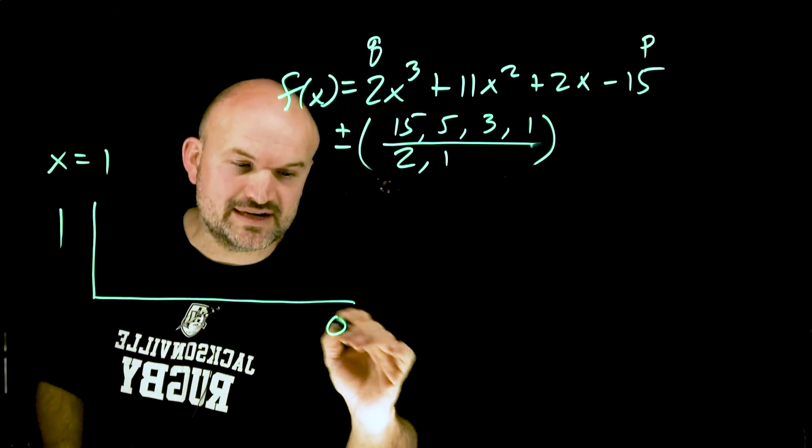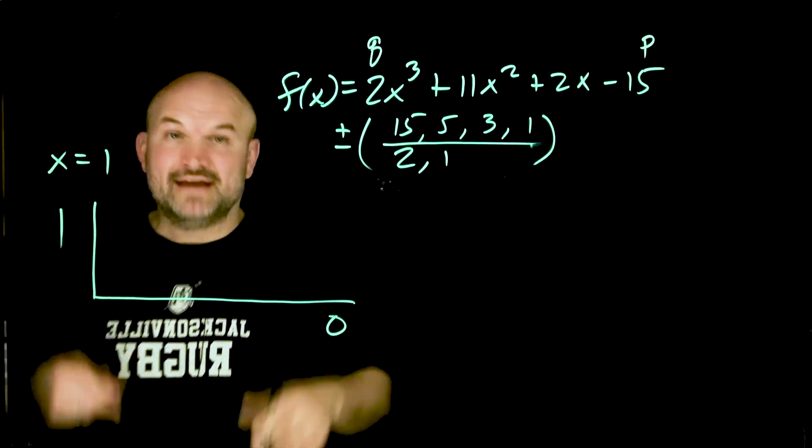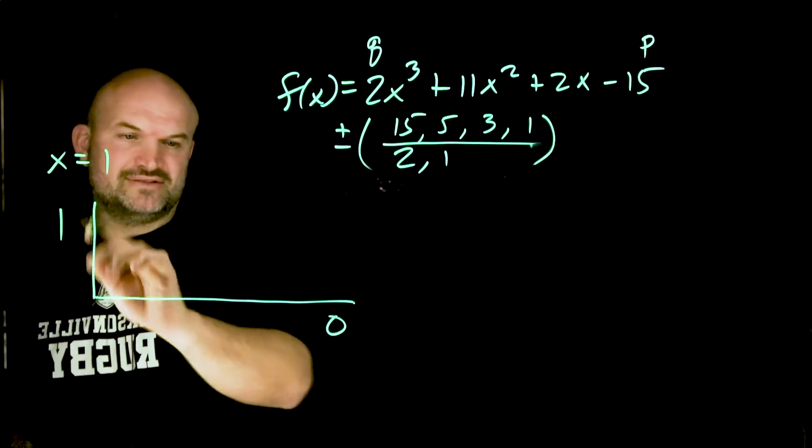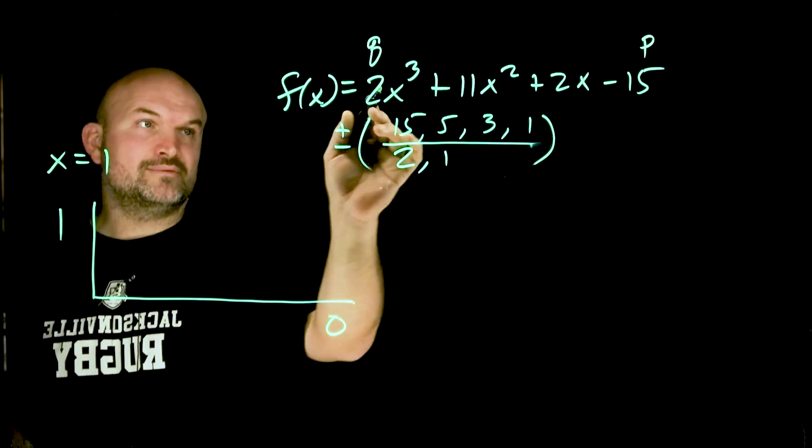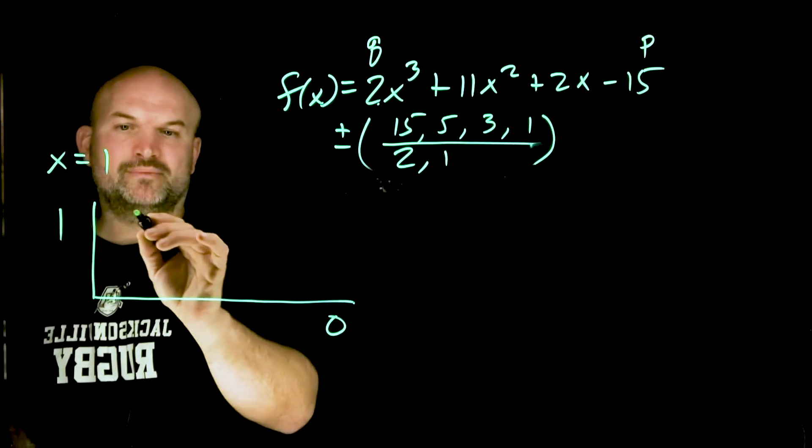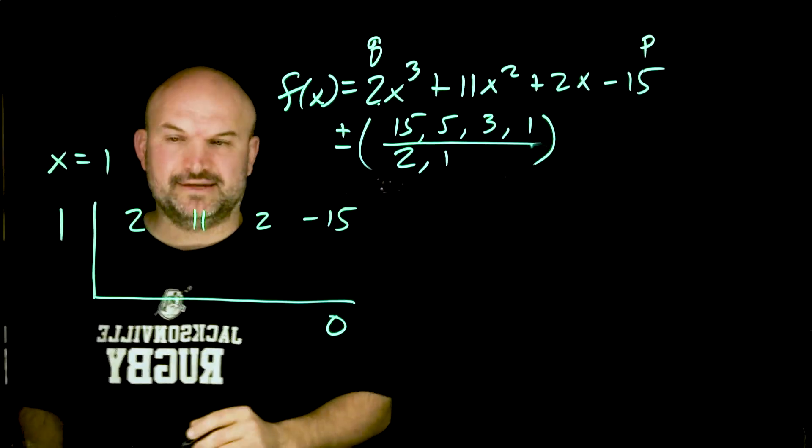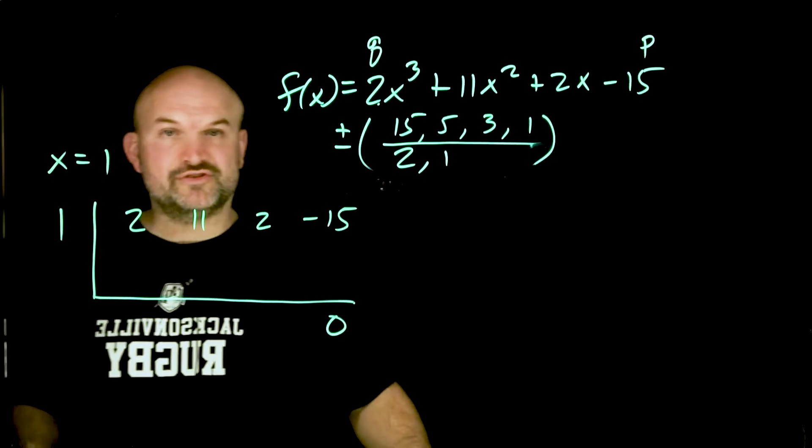If we get a remainder of 0 then we know that is a polynomial and the quotient is also going to be a factor. We take the zero, put it on the outside of the synthetic division bar and then we take the coefficients of our polynomial: 2, 11, 2 and negative 15.